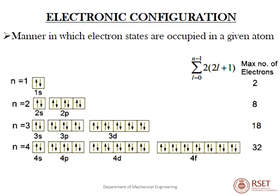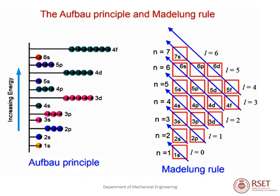There are two principles for filling shells: the Aufbau principle and Hund's principle. These principles specify which shell to write in the configuration based on energy level. For example, after 3p it is not 3d — the 4s orbital has lower energy compared to 3d, so 4s is written before 3d. Such principles are applied to properly write the electronic configuration.